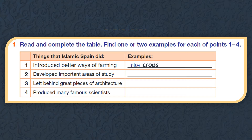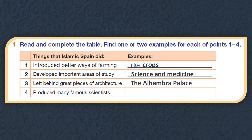Number two: developed important areas of study. What areas of study did they focus on? Like Al-Zahrawi and Al-Khatib — they focused on science and medicine. Excellent. Number three: left behind great pieces of architecture. Can you give me some examples? Cordoba and Granada — excellent. The Alhambra Palace in Granada. Number four: produced many famous scientists like Al-Khatib, Al-Zahrawi, and many more.